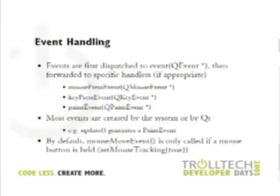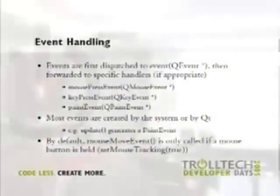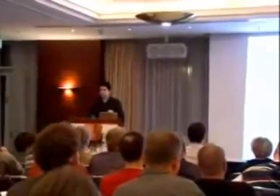Event handling is straightforward. There is the event function that receives all events, and depending on the type, forwards them to different event handlers. The advantage is that you don't have to cast the event type yourself. Events can be created by the system, by Qt, or even by the application. For example, if you want to create a paint event to repaint an area of your widget, you would use the update function, which does it for you.